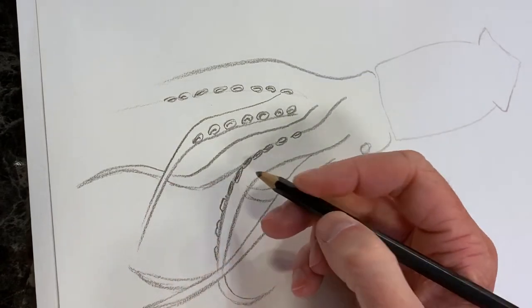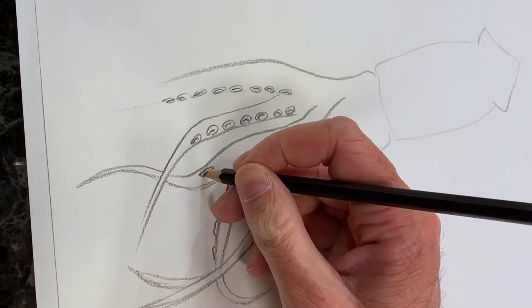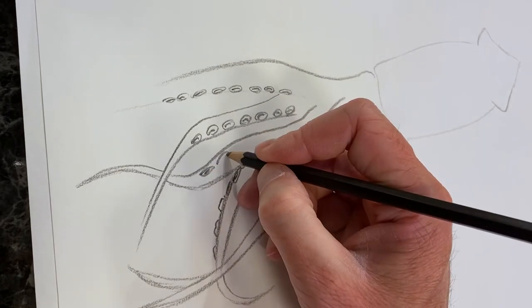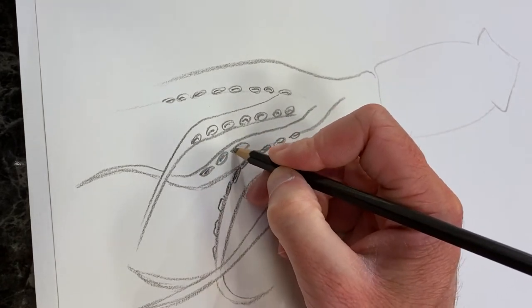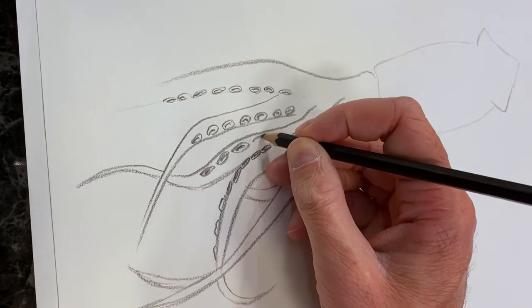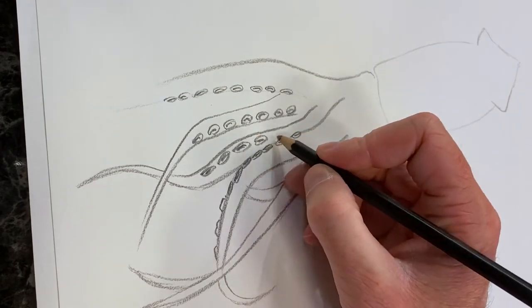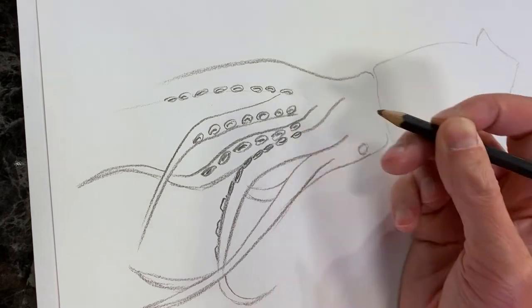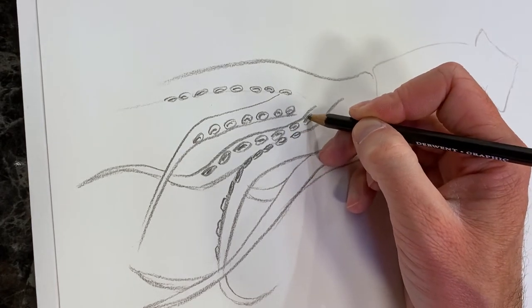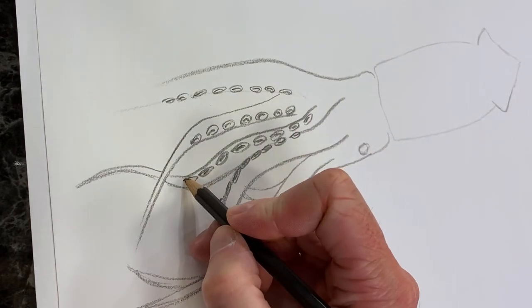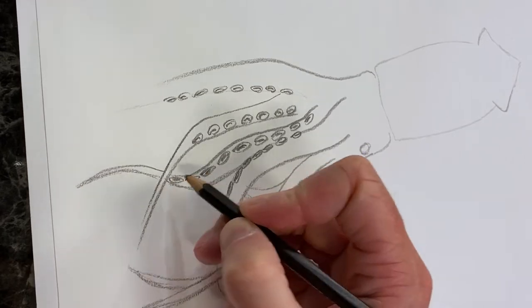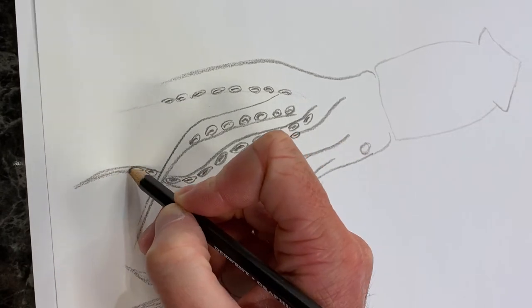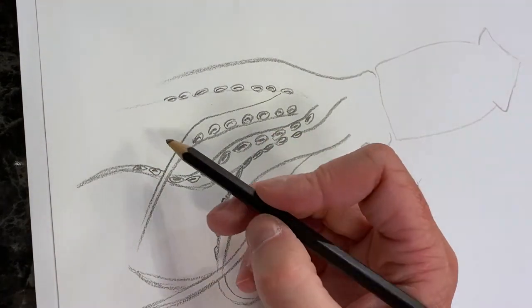So we basically just want some variation with these arms coming out and the suckers on them.